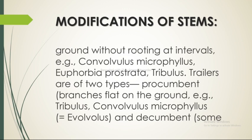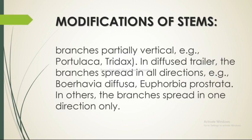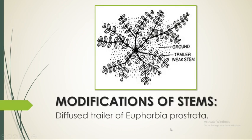Trailers are of two types: procumbent — branches flat on the ground, e.g., Tribulus, Convolvulus microphyllus (also known as Evolvulus); and decumbent — branches partially vertical, e.g., Portulaca oleracea. In diffuse trailers the branches spread in all directions, e.g., Boerhavia diffusa and Euphorbia prostata. In others the branches spread in one direction only. This is the diffuse trailer of Euphorbia prostata, which includes the ground trailer and weak stem, as shown in the figure.